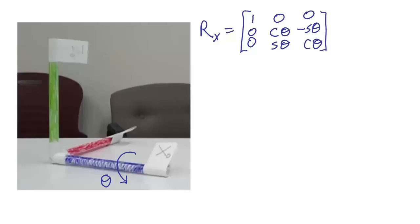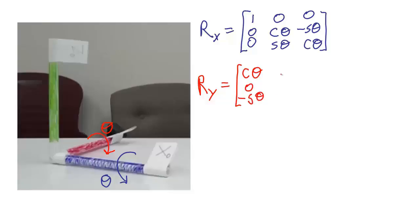Rotating around the x axis is not the only way that we could rotate this frame. Another way would be to leave the y axis on the table and rotate the rest of the frame around the y axis. I'm going to draw the direction of this rotation so that it will be a positive rotation. The rotation matrix for a rotation around the y axis has the standard form: cosine theta, 0, negative sine theta for the first column; 0, 1, 0 for the second; and sine theta, 0, cosine theta for the third.